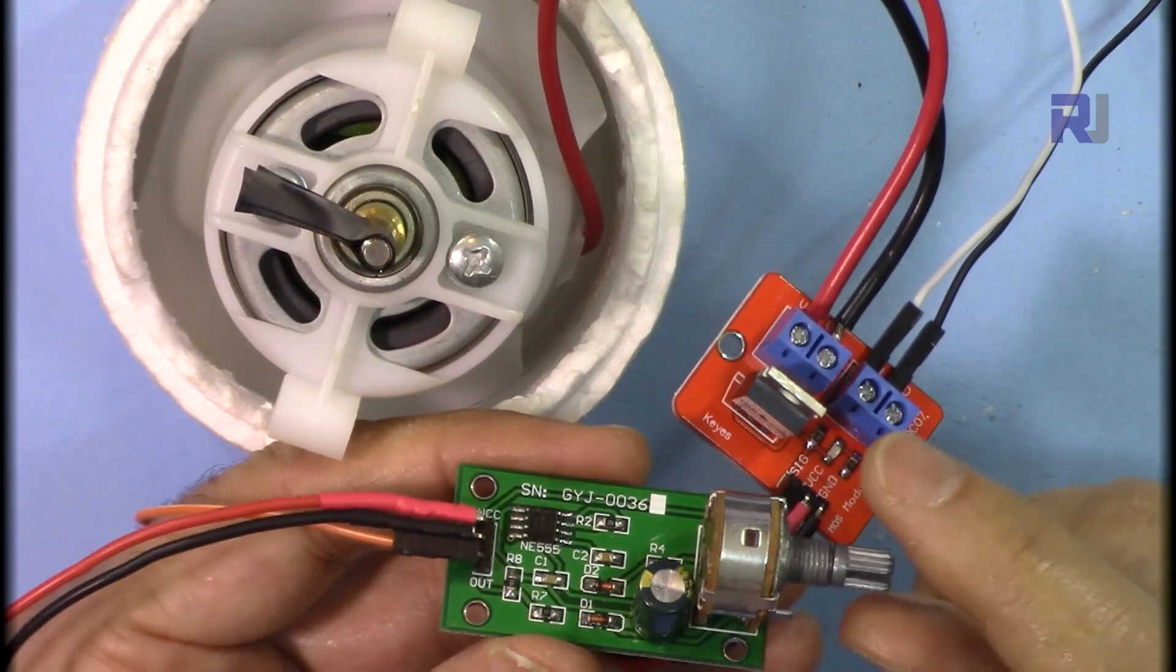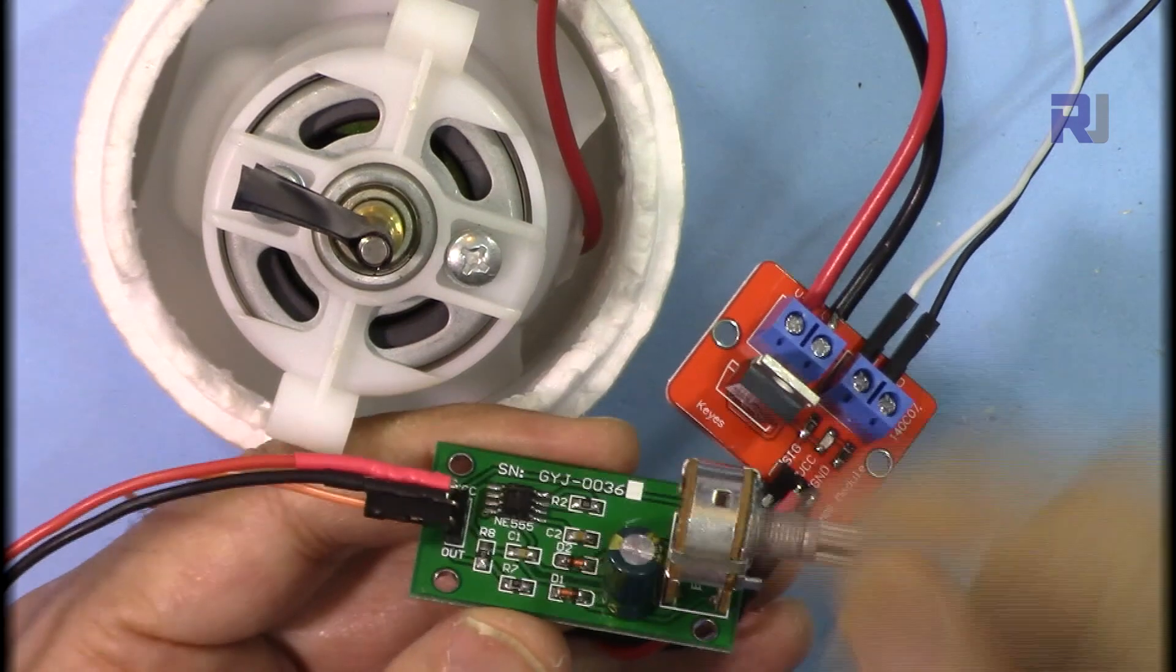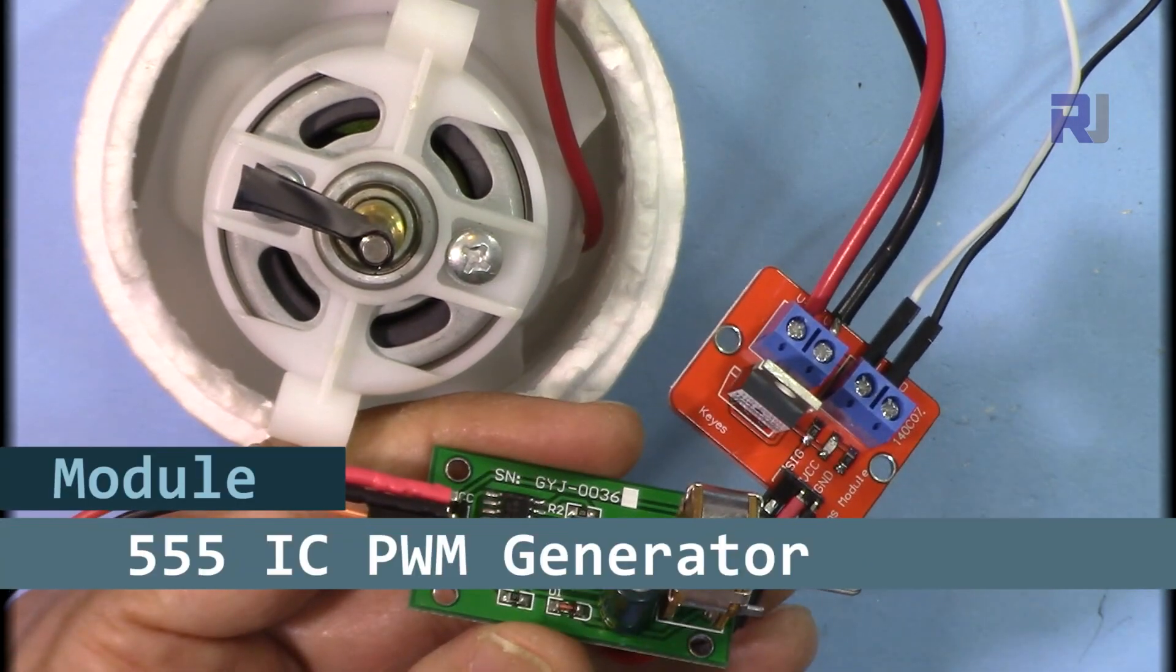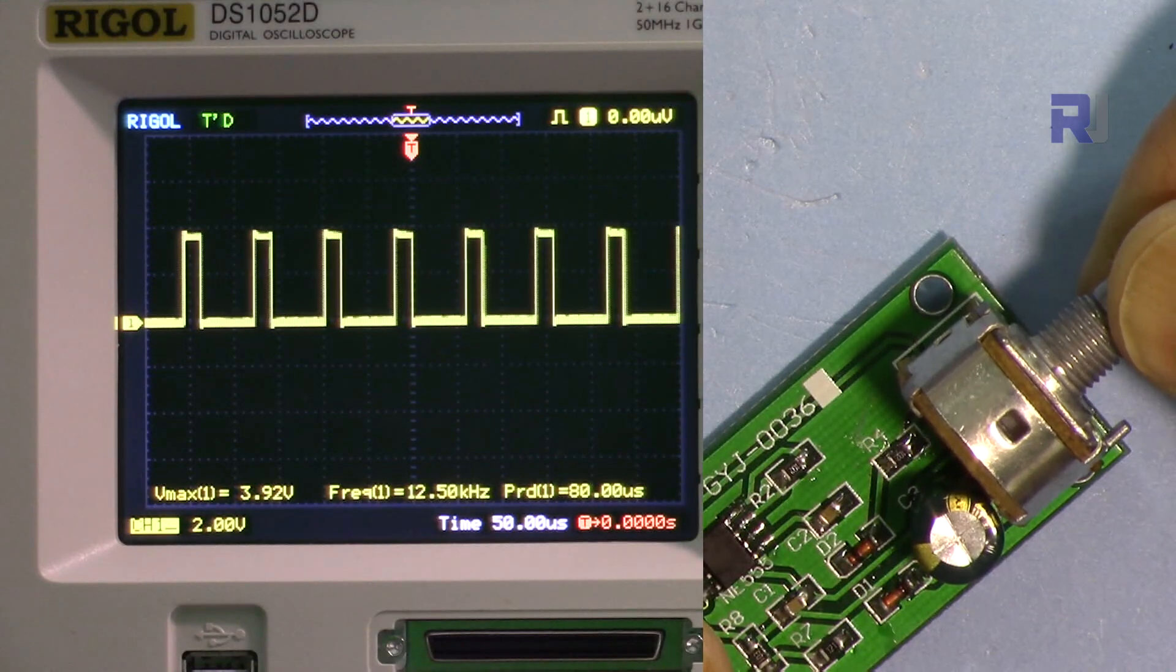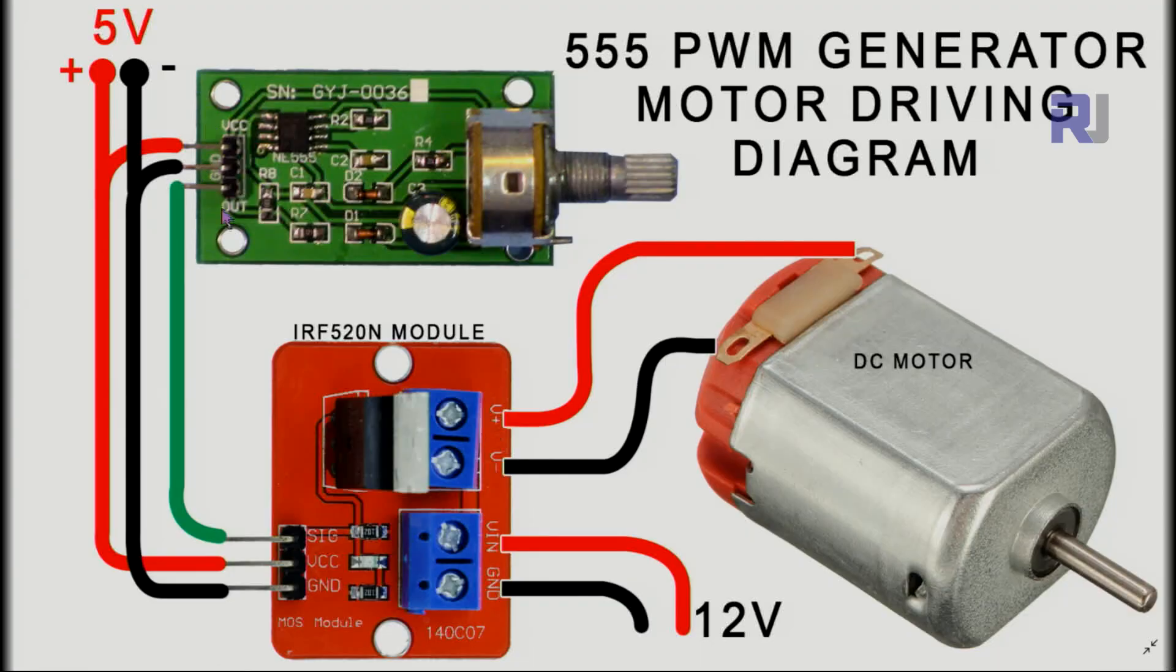Hi, welcome to a product review and test by Robojax. In this video we are going to have a look at this pulse width modulation module based on IC 555 timer. We are going to check the waveform on an oscilloscope to see if it really generates pulse width modulation. Also, you'll see a wiring diagram how to connect it to a motor driver to control a motor.